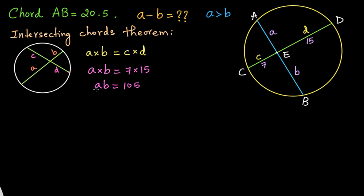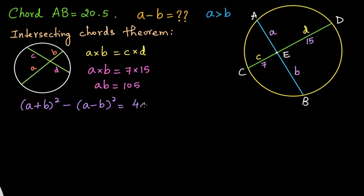We got the product A times B as 105, but we want the difference A minus B. So we have the product and we want the difference — we need to take the help of algebra now. One of the algebraic identities will be used here. The identity is: A plus B whole squared minus A minus B whole squared equals 4 times AB.